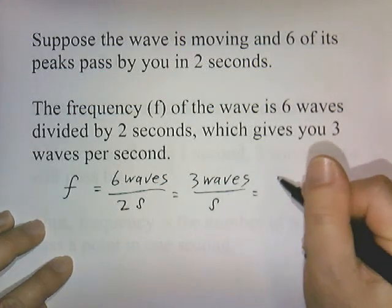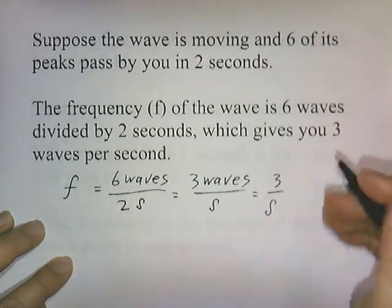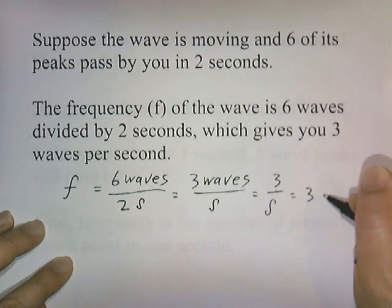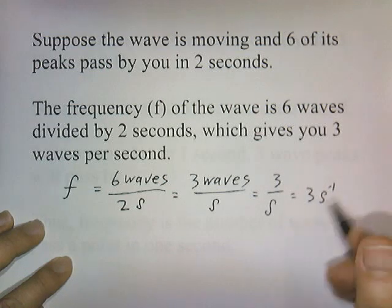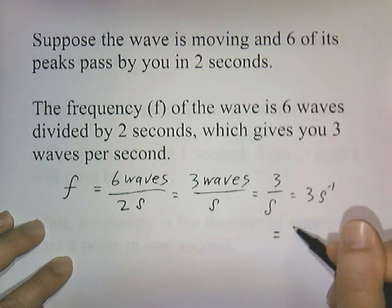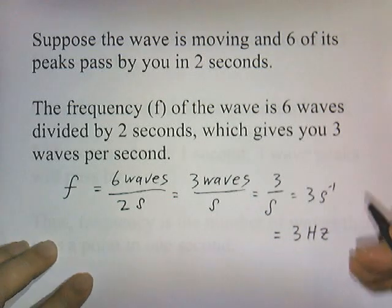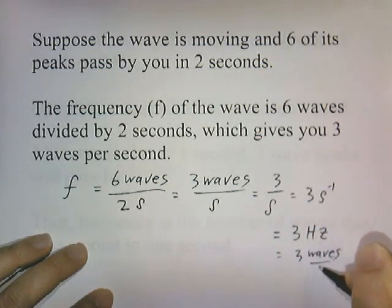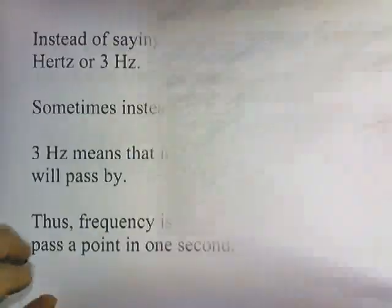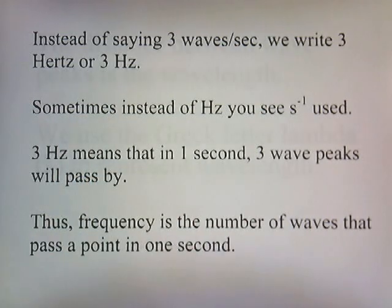Sometimes they don't write the word 'waves' — they just say 3 per second, or write 3 seconds to the negative 1. Seconds to the negative 1 is the same as 1 over seconds. We can also write 3 hertz. Hertz is another way of saying waves per second. Hertz was named after a scientist who did work on the waves of a photon.